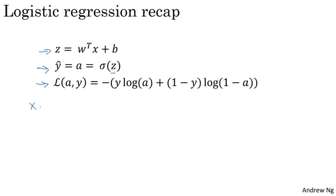Let's write this out as a computation graph. For this example, let's say we have only two features x1 and x2. In order to compute z, we'll need to input w1, w2, and b in addition to the feature values x1 and x2. These things in a computation graph get used to compute z, which is w1×x1 + w2×x2 + b.